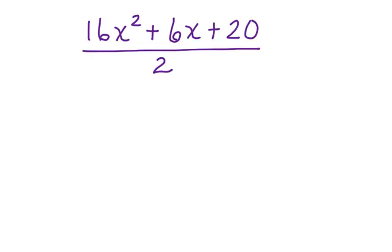16x squared plus 6x plus 20 divided by 2. Now this means that we are going to divide this whole polynomial in the numerator by 2, which is in the denominator. To do this, we're going to split up the terms of the polynomial.